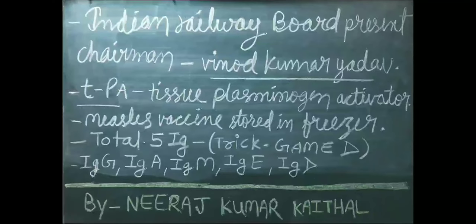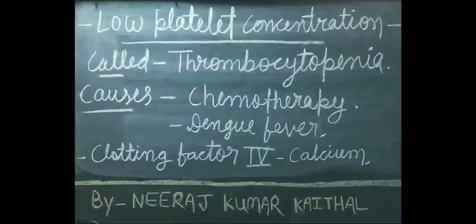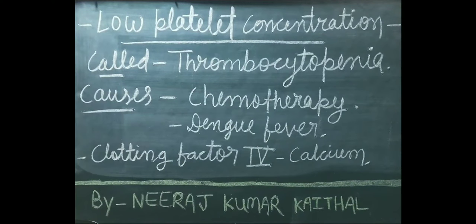Hamare sharir mein kul 5 prakar ki immunoglobulins payi jaati hain: IgG, IgA, IgM, IgE, IgD. Inhe yaad rakhne ke liye aap trick word yaad rakh sakte hain — GAME D.